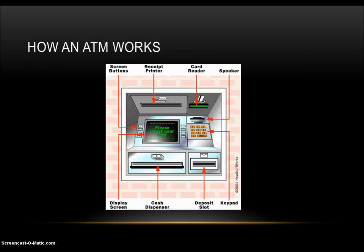How an ATM works. This is a little bit complicated, but we'll try and simplify it here. The card reader captures the account information stored on the magnetic strip on the back of an ATM or debit card, or credit card. The host processor uses this information to route the transaction to the cardholder's bank.